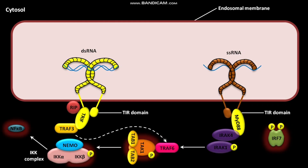IRAK1 directly phosphorylates and activates IRF7. The phosphorylated and active IRF7 then dimerizes, and the active dimerized IRF7 moves towards the nucleus.